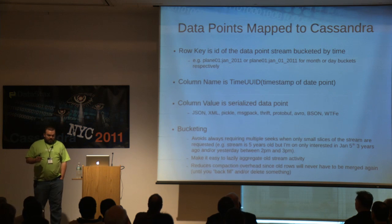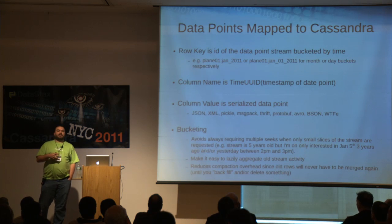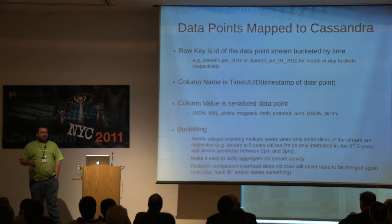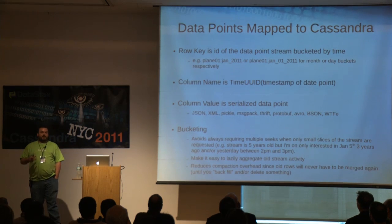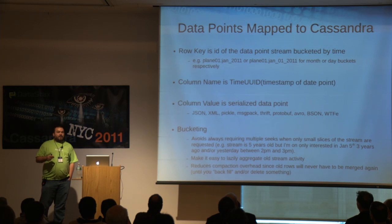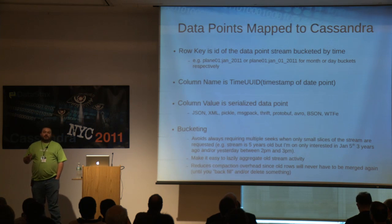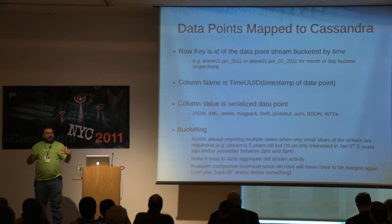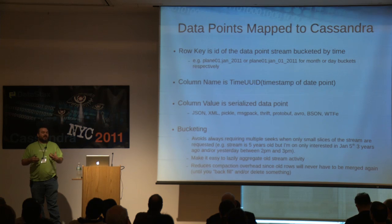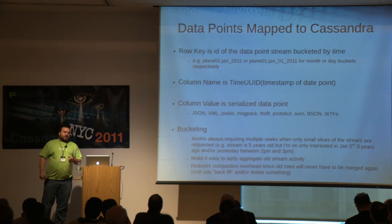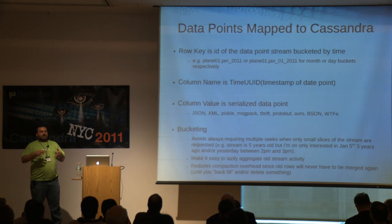Cassandra has at the top level a key space — a logical grouping of column families. Each key space contains multiple column families; each column family contains multiple rows. Each row has a row key, and with that row key is associated any number of columns. A column consists of a name and a value — essentially tuples. A row key maps to an ordered list of tuples, ordered by the column name. If you think of it as a giant hash map, it's ordered by the key. Multiple rows fit in a column family, multiple column families inside a key space.